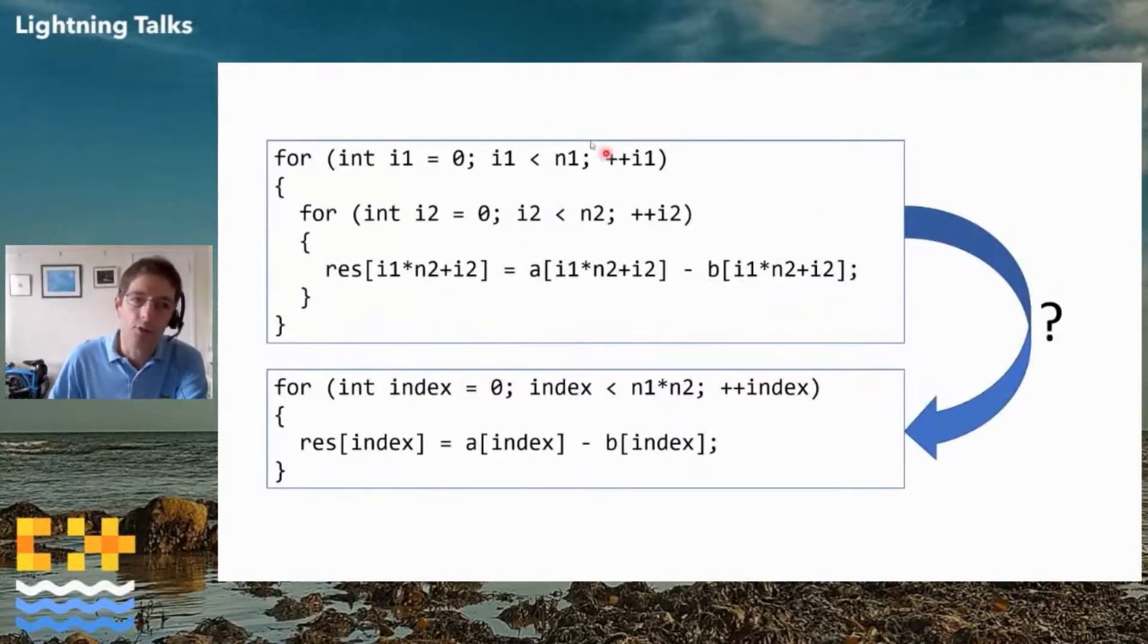I wanted to get something such as a vector a minus a vector b, everything element-wise, and put the result inside res. We're looping on all these three values, and n1 is very big. Ideally, I would like the compiler to actually completely flatten and collapse these two loops so they can vectorize.